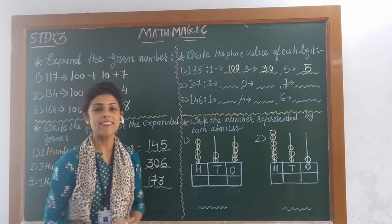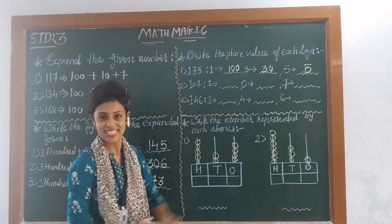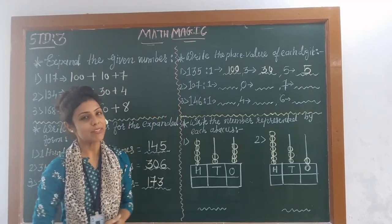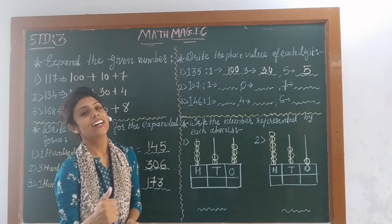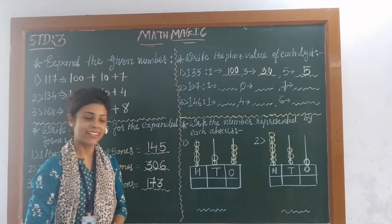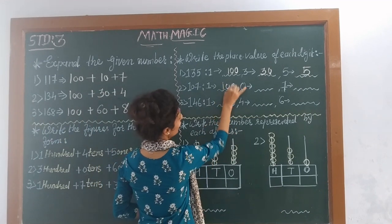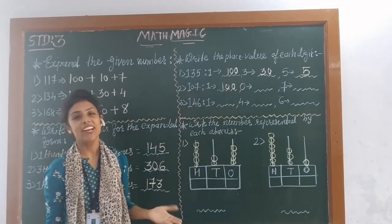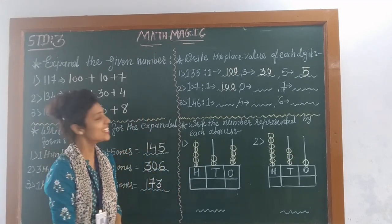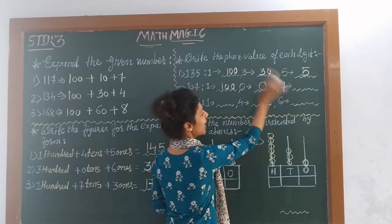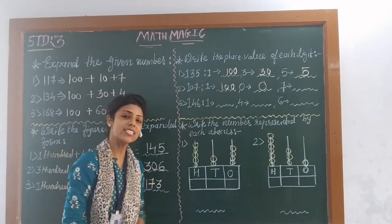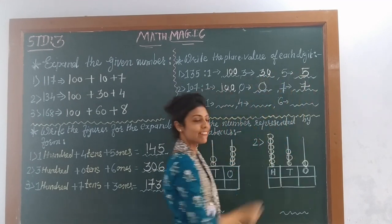Next number: 107. 1 is at 100's place, so 1 multiplied by 100 is 100. Place value of 0 is always 0. And 7 is at 1's place, so 7 ones are 7.